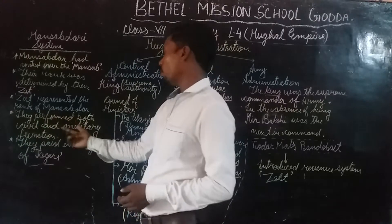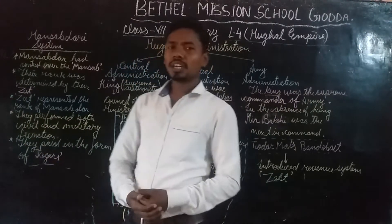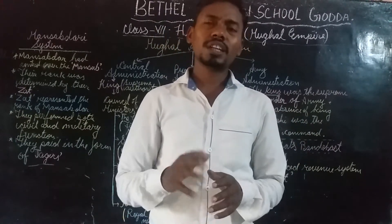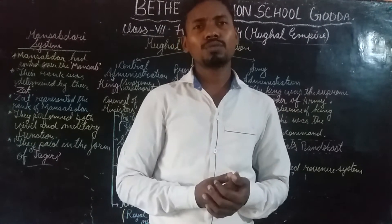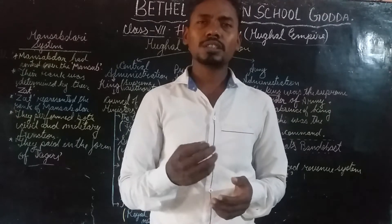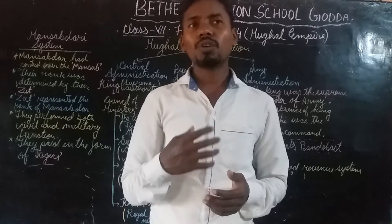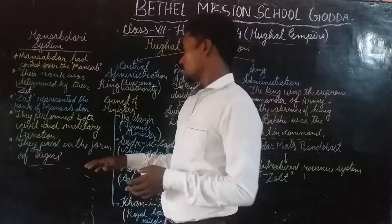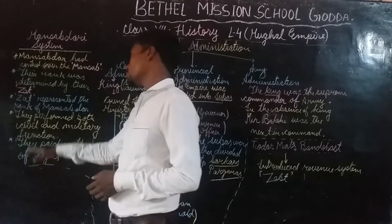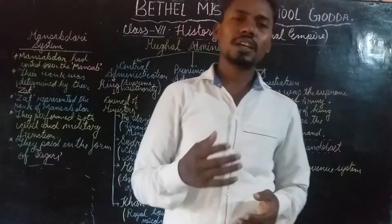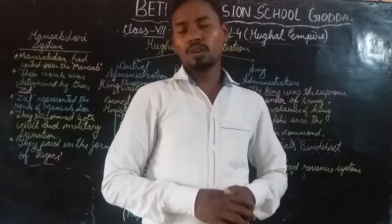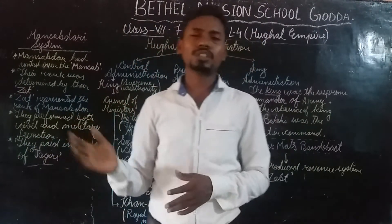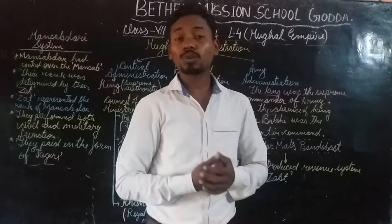The Zaat was a number which represented the rank of the Mansabdar. They performed both civil and military functions — they could also take control over the Mansab area if there was any requirement of military action, for example if a small revolt had risen. They could take their own army and try to control the revolt. They were paid in the form of Jagir. Because of the duties they performed, they were paid in the form of Jagir. The Mansabdars could collect taxes in their particular area.